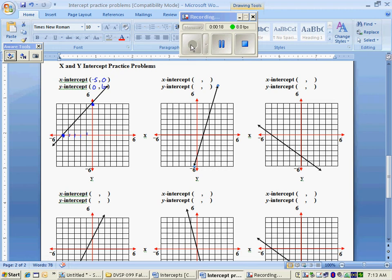Second graph, again finding their positions first, 1 in the x, 0 in the y. For the y-intercept, down negative 4 and over 0. So, 0, negative 4 is the ordered pair.